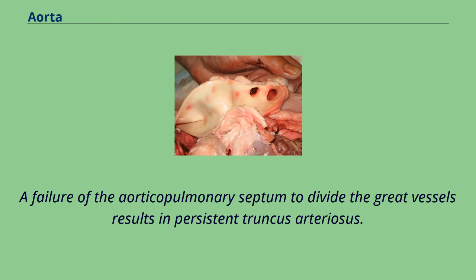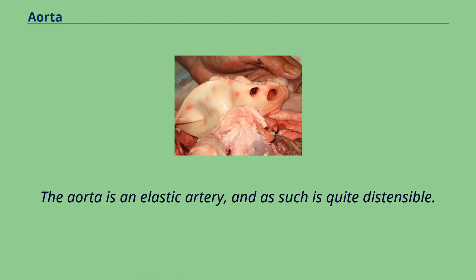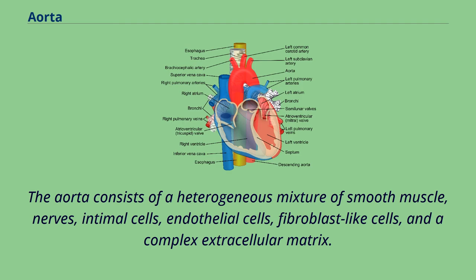The aorta is an elastic artery, and as such is quite distensible. The aorta consists of a heterogeneous mixture of smooth muscle, nerves, intimal cells, endothelial cells, fibroblast-like cells, and a complex extracellular matrix.